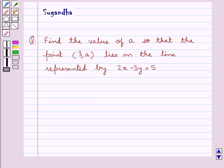Hello and welcome to the session. In this session we discuss the following question which says, find the value of A so that the point (3,A) lies on the line represented by 2x minus 3y equal to 5.